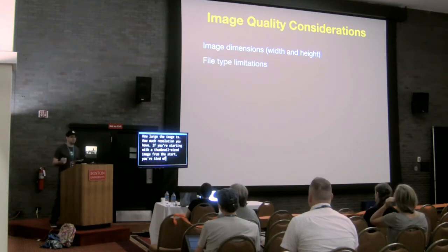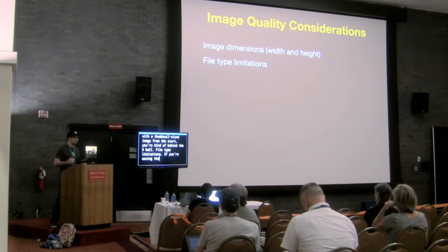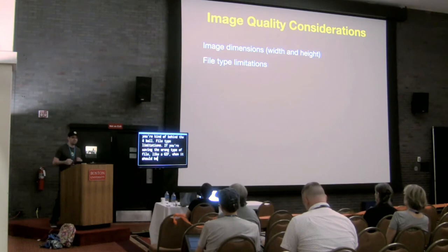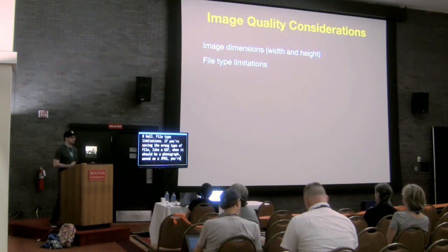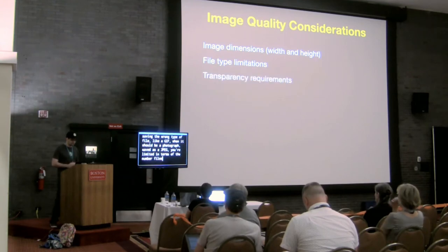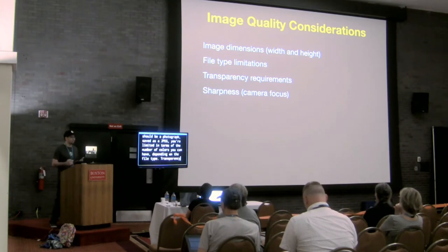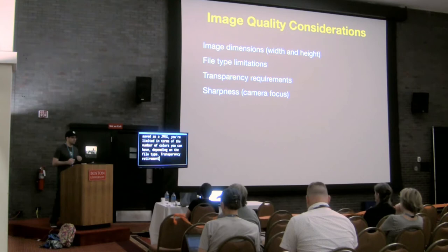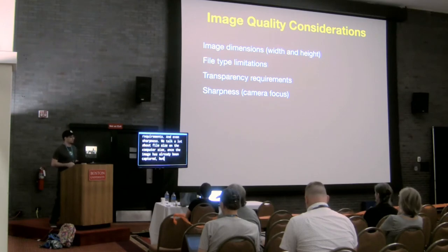File type limitations — if you're saving the wrong type of file, like a GIF when it should be a photograph saved as a JPEG, you're limited to the number of colors you can use depending on the file type you choose. Make sure you're choosing the right file type. Transparency requirements, and even sharpness. We talk a lot about file size on the computer side, but so much of what goes into having a great source image is actually the sharpness of the image when it was captured in camera.